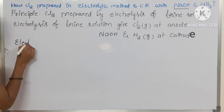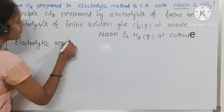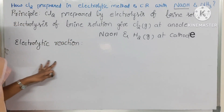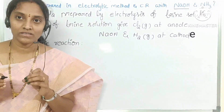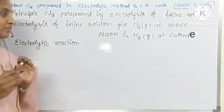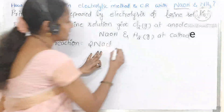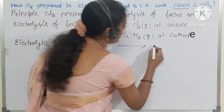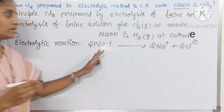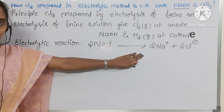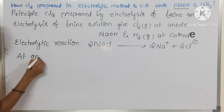Now the electrolytic reaction: brine solution is highly concentrated sodium chloride in water. During electrolysis, 2 moles of sodium chloride will form 2 moles of sodium ions and 2 moles of chloride ions.